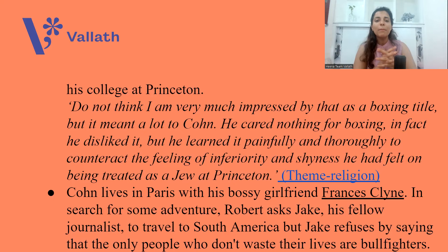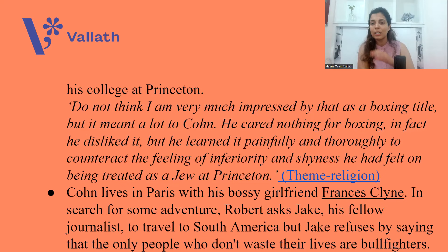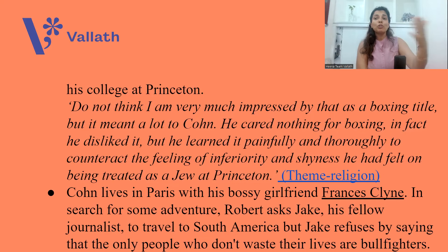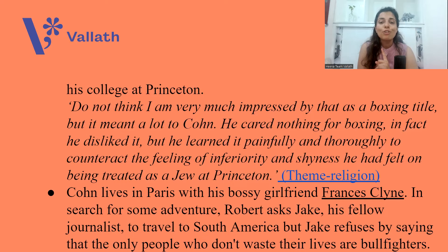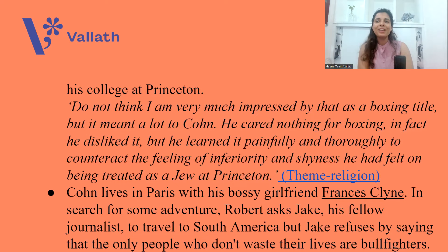In Paris, Cohn lives with his bossy and very dominating girlfriend named Frances Klin. Frances is with Cohn only for his money, but later Cohn will leave her. In search of adventure, Cohn feels that his life is running so fast and he wants to travel and see the world. So Robert asks Jake, his fellow journalist, to travel with him to South America, but Jake refuses. He says that the only people who don't waste their lives are bullfighters — and you will hear references to bullfighters time and again in this novel.